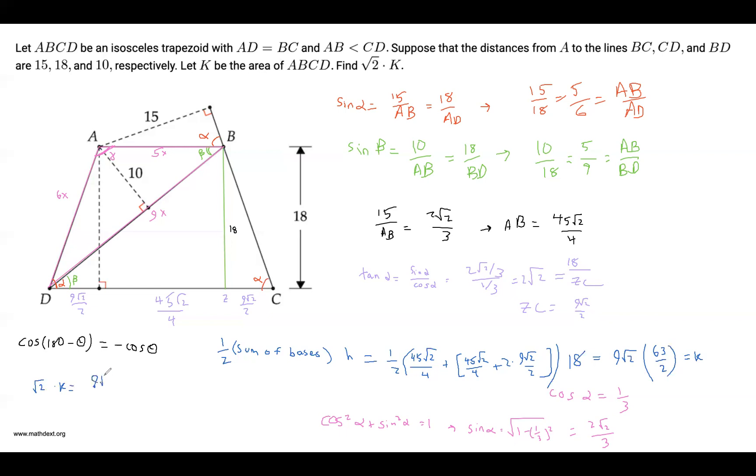equals 9 root 2 times 63 over 2 times square root of 2, which the square root of 2's cancel out with this 2, and we're left with 63 times 9, which is 567, which is our desired answer. Thanks for watching and I will see you next time.